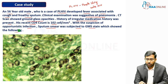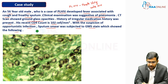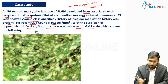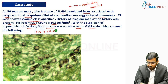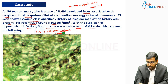The normal CD4 count is between 500 to 1500 cells per millimeter cube. We usually use a technique called flow cytometry to determine this particular cell count.